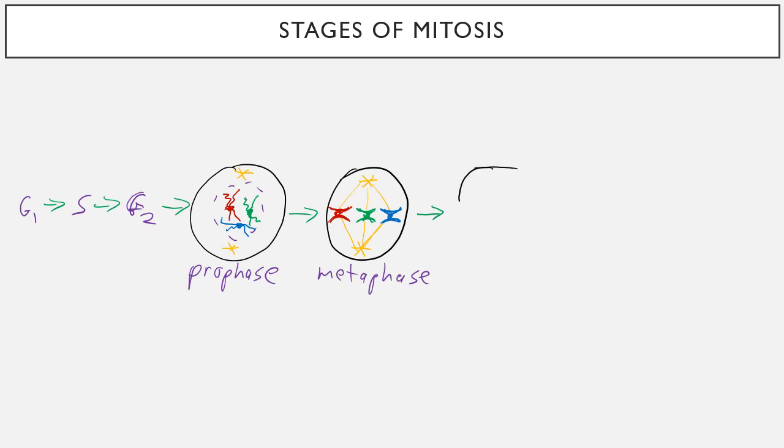Then the cell starts squeezing a little at the middle and pulling towards the outsides. The mitotic spindles start getting shorter to pull the sister chromatids apart. And the centromere at the middle of the chromosome finally replicates itself, splits apart. And so now we have red chromosomes being pulled to opposite sides, green chromosomes being pulled to opposite sides, blue chromosomes being pulled to opposite sides of the cell.